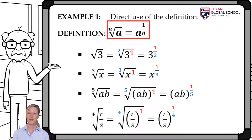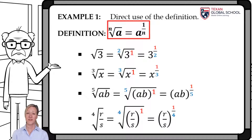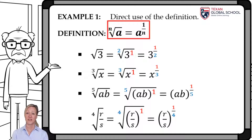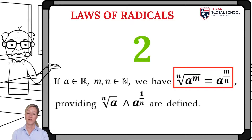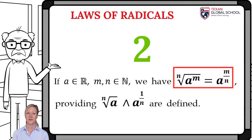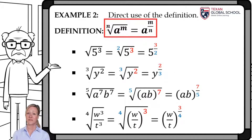The cube root of x can be represented as x raised to 1 third. The exponent of x goes as the numerator and the index of the root as the denominator of the exponent of the base. The product ab in a fifth root can be represented as ab raised to 1 fifth. The fourth root of the quotient r over s can be represented as r over s raised to 1 fourth. From this first definition, it can be deduced that the nth root of a raised to m is equivalent to the base a raised to m over n.